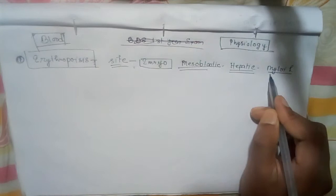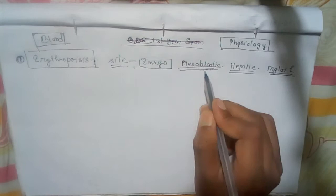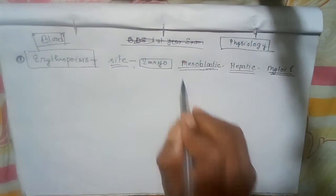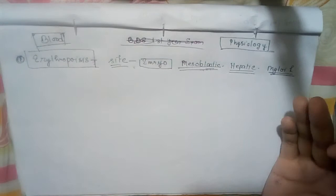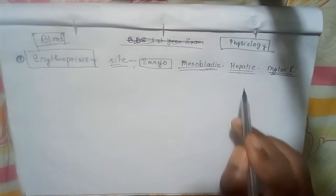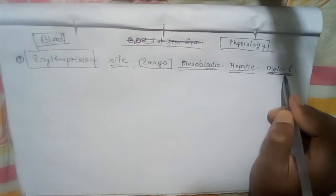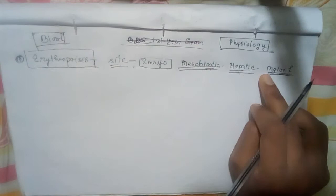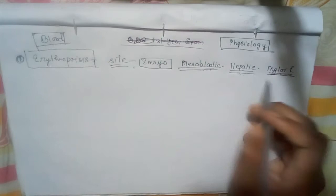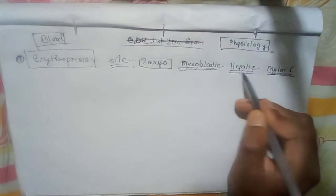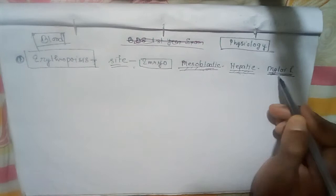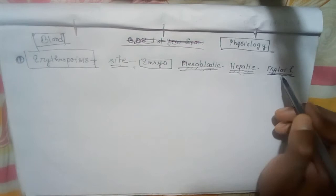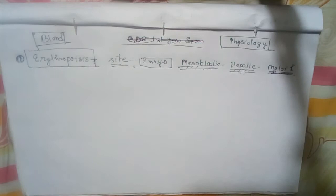In the mesoblastic stage, during the first three months of intrauterine life, RBCs come from the mesenchyme of the yolk sac. In the hepatic stage, from the third month, the liver is the main organ forming RBCs. In the myeloid stage, during the last three months of intrauterine life, red blood cells are produced by the red bone marrow.